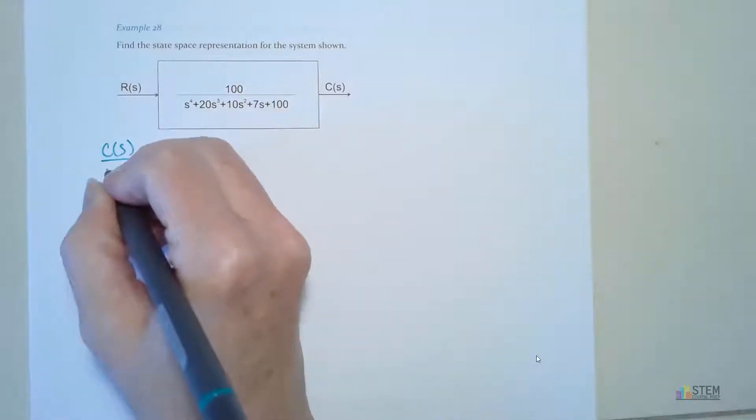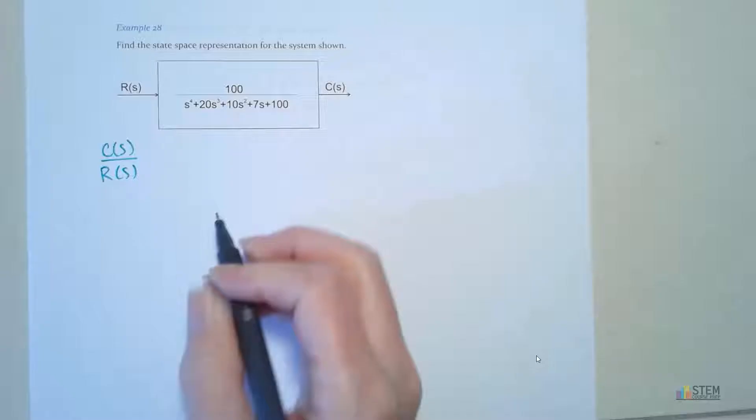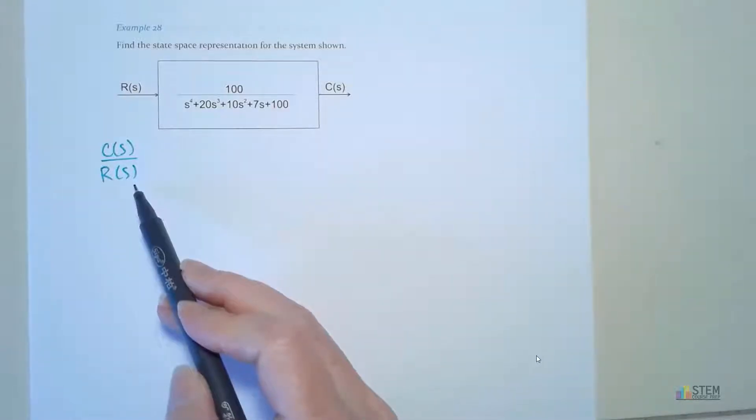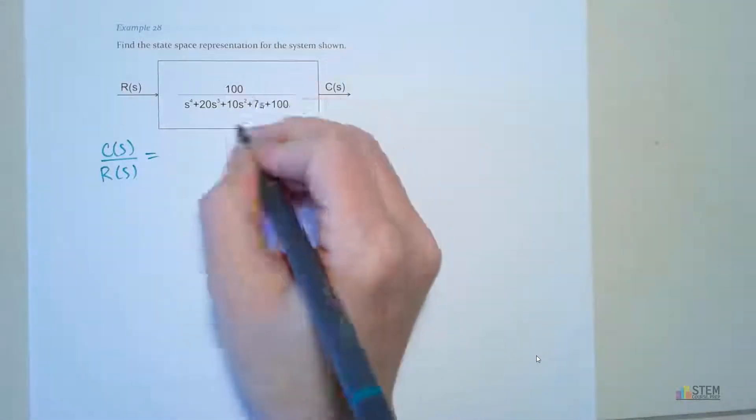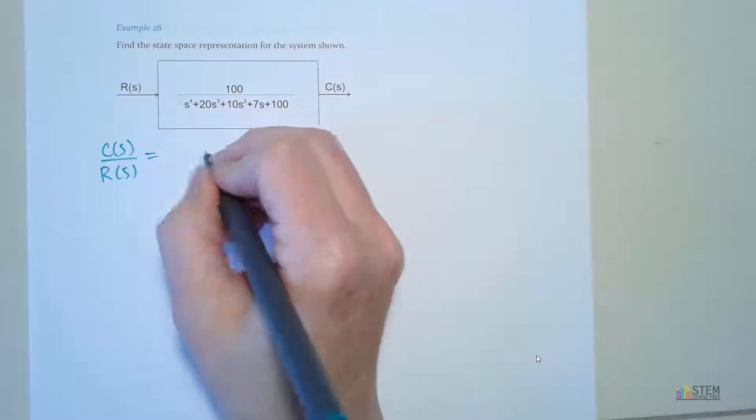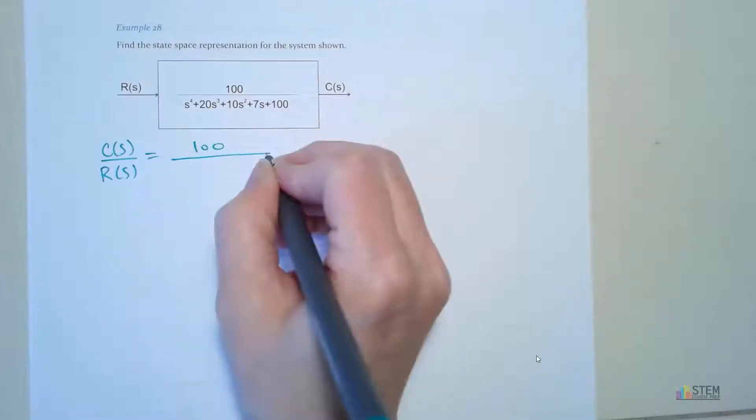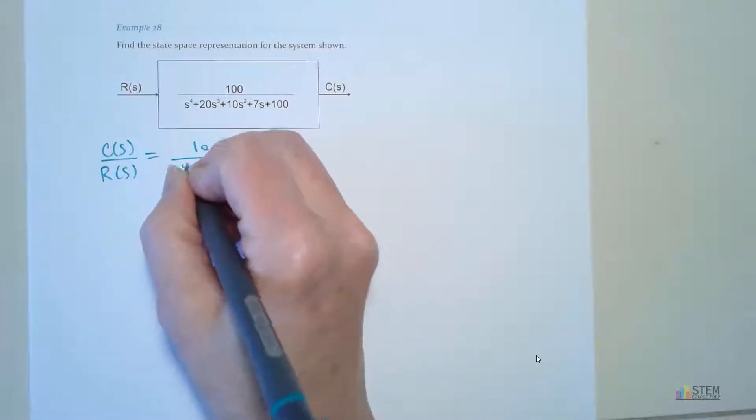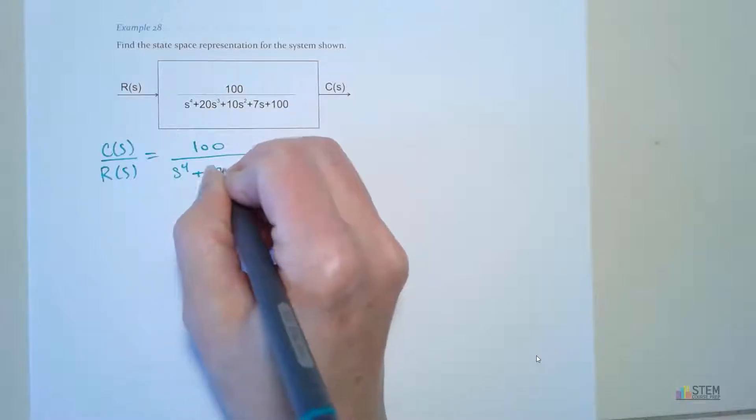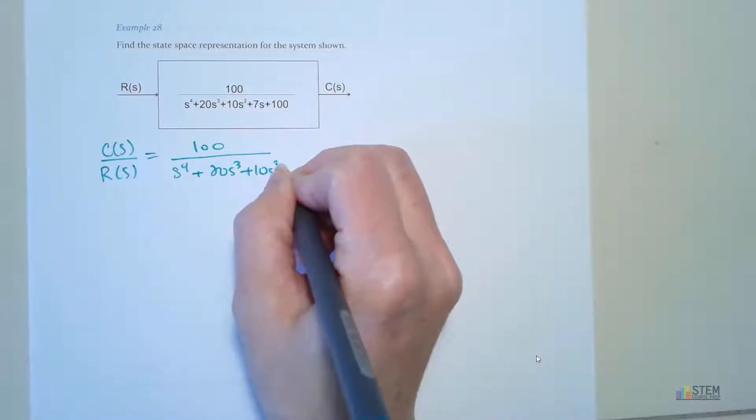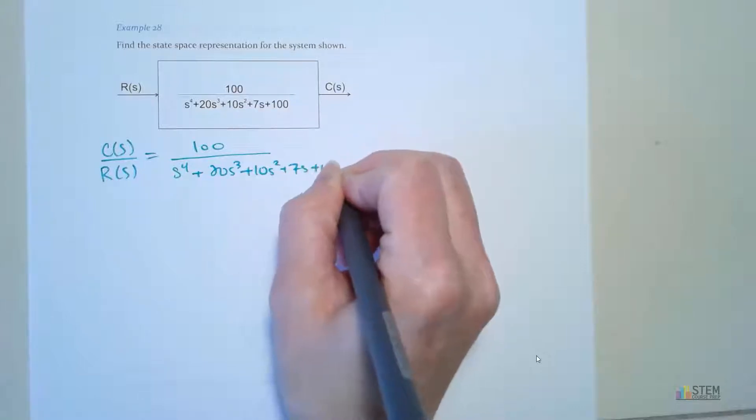So what we have here is this transfer function. Remember a transfer function is output over input. So that means we have c of s over r of s. And we're going to set that equal to this transfer function. So we have 100, put that over s to the 4th, plus 20s cubed, plus 10s squared, plus 7s, plus 100.